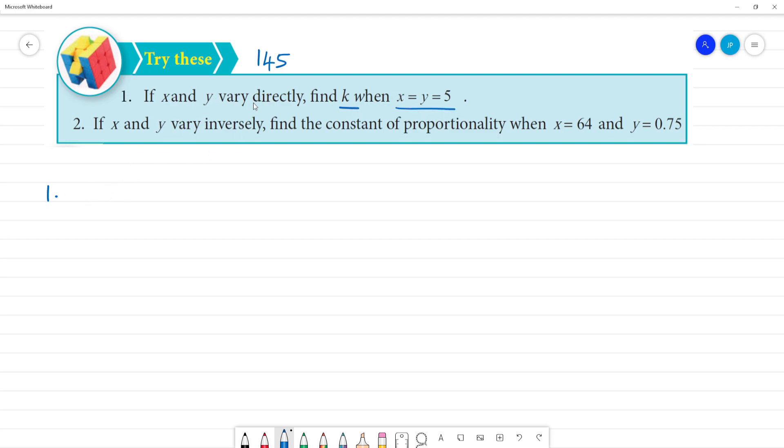So if x and y vary directly, that means x is directly proportional to y. Now for directly proportional, we replace the proportionality symbol with an equation: x is equal to k times y, where k is the proportionality constant.